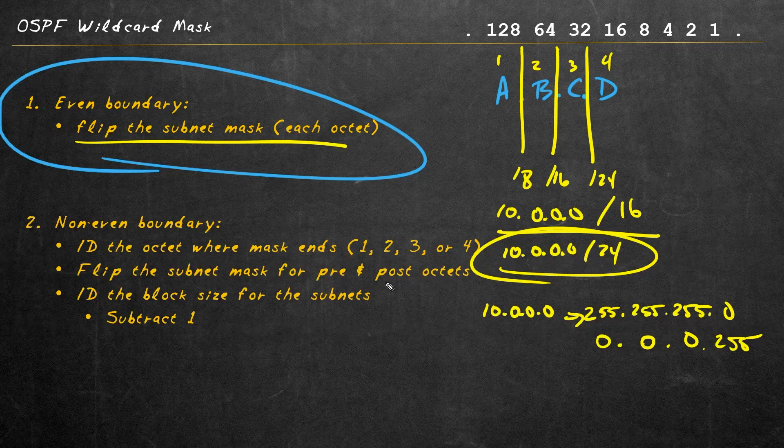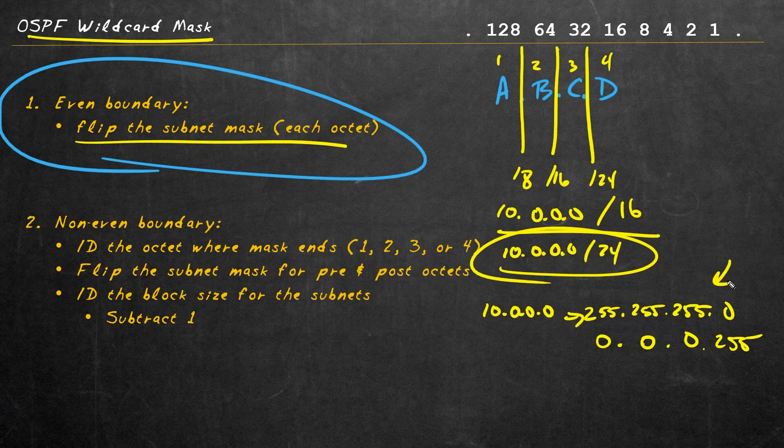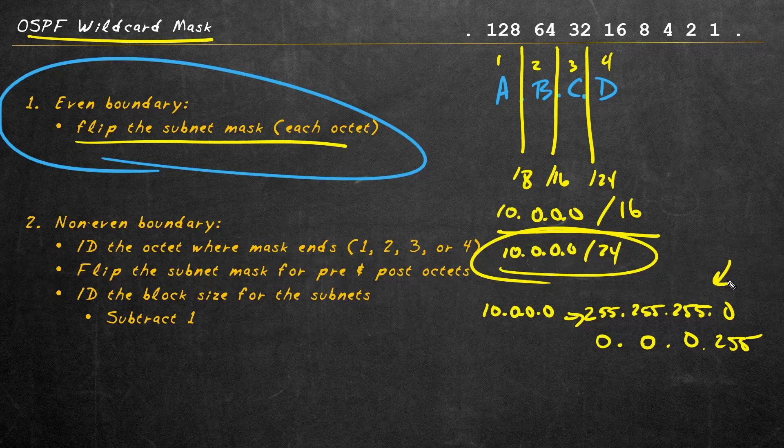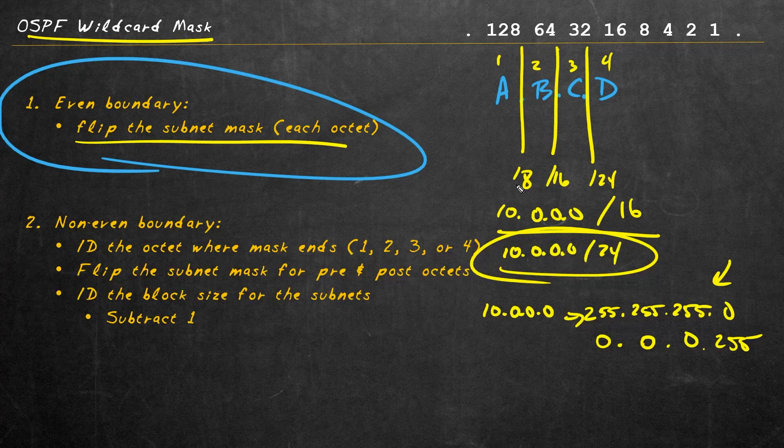So nice clean boundaries, no problem. Just go ahead and follow the rule of flipping the subnet mask to create the OSPF wildcard mask for that specific network. And again, for the syntax for implementing this and configuring it, check out my other OSPF videos. This is the wildcard mask, just flipping it. That's pretty easy to do if we have nice clean boundaries.